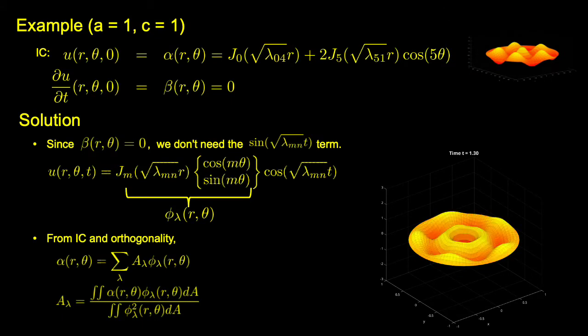We next show an example. Set the initial displacement to be a mixture of eigenfunctions u_041 and u_511, and set the initial velocity to be zero.